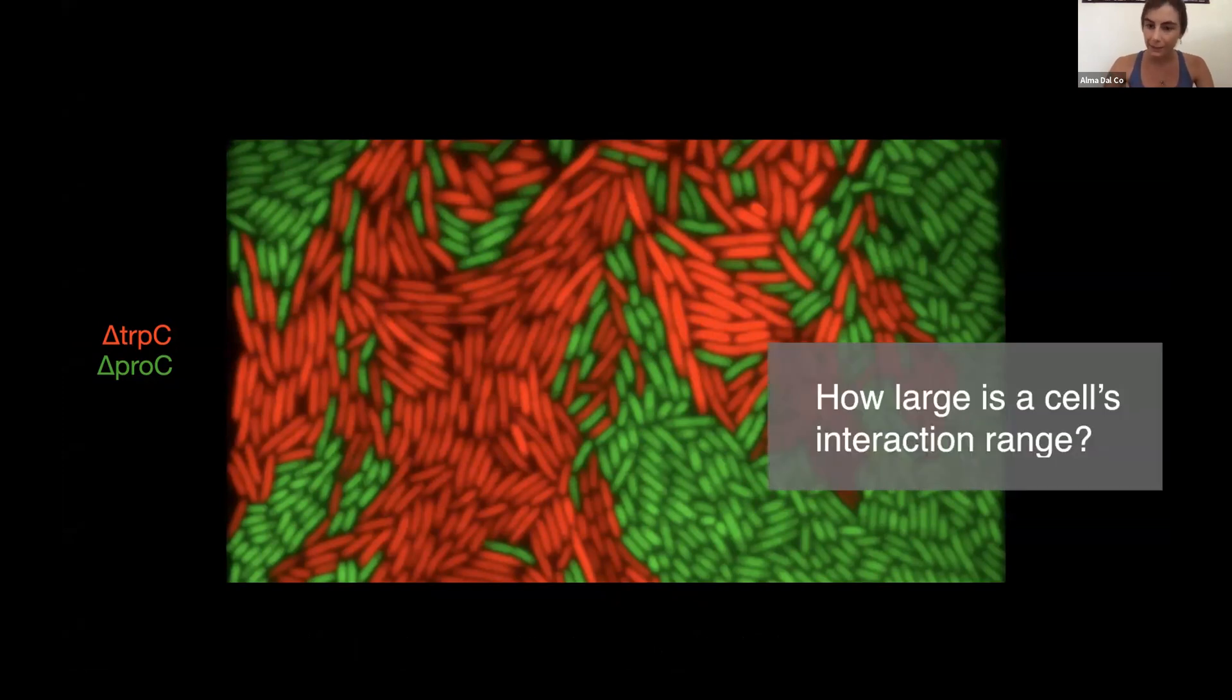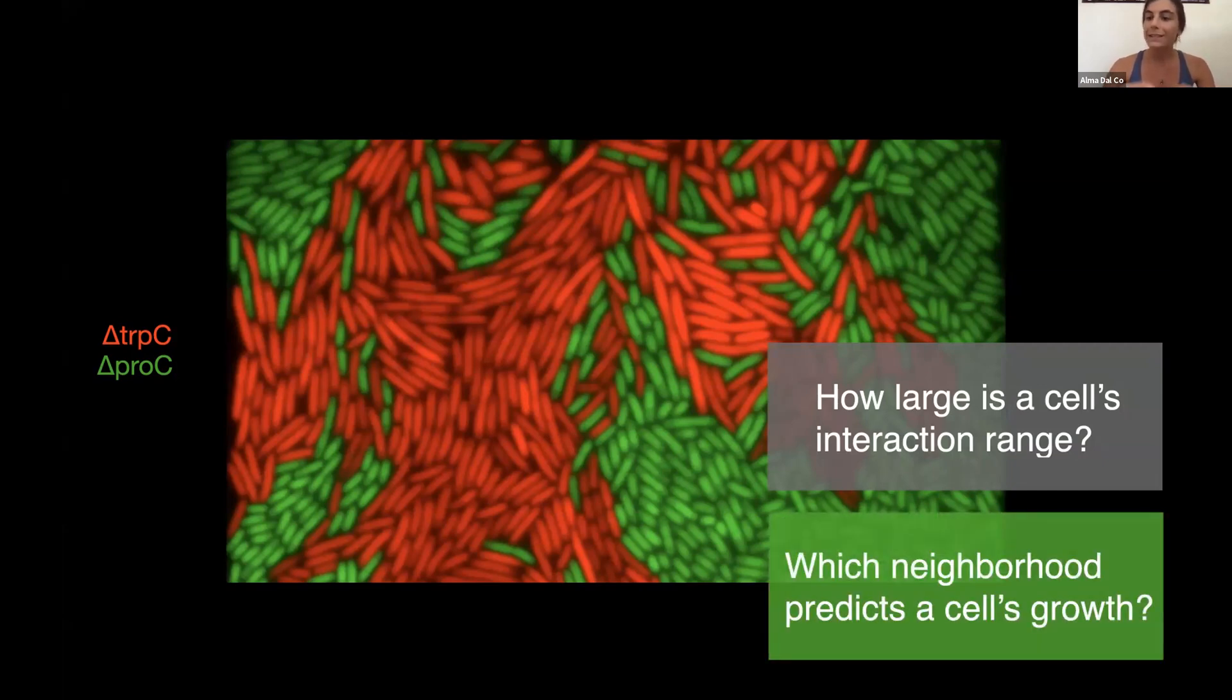So this is a perfect data set to ask how does a cell interact with its neighbors. A naive expectation would be that a cell surrounded by the partner from which it received the amino acid would grow faster. So the question we ask exactly is which is the neighborhood that predicts a cell's growth rate?